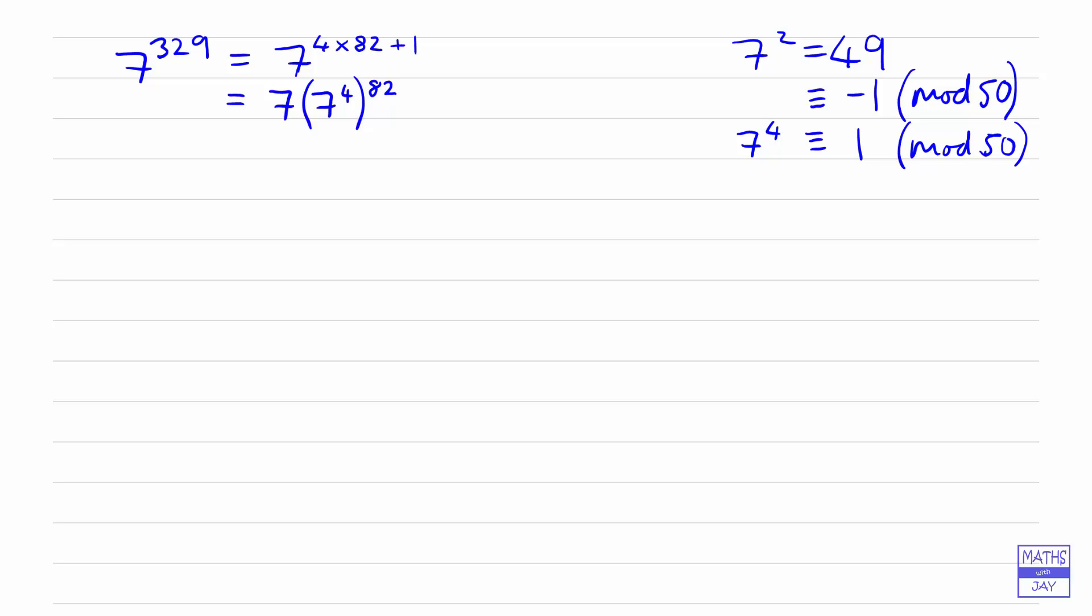So now we can say that that's congruent to 7 times, well 7 to the power of 4 is congruent to 1, so we've got 1 to the power of 82 and of course 1 to the power of anything is 1, and I should have put a mod 50 in here. And so now we can say well that's just congruent to 7 times 1, in other words just 7. So we have found without having to do very much work at all that when we divide 7 to the power of 329 by 50 we get a remainder of 7.